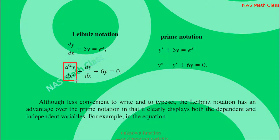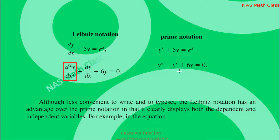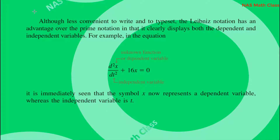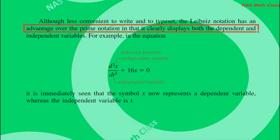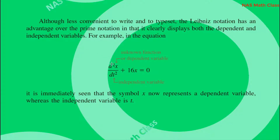Now let us look at another example involving d²y/dx². Leibnitz notation has an advantage over prime notation in that it clearly displays both the dependent and independent variables. That is, in Leibnitz notation we can immediately see which is the dependent variable and which is the independent variable, whereas in prime notation the independent variable is not explicitly shown.